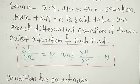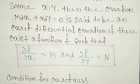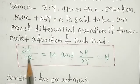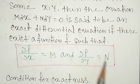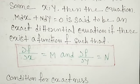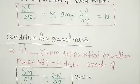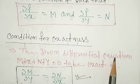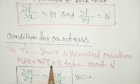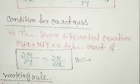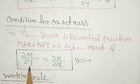Now, any equation in the form of M dx plus N dy is said to be exact if ∂f/∂x = M and ∂f/∂y = N and these should be equal. So, the condition for exactness: the given differential equation M dx plus N dy = 0 is exact if ∂M/∂y = ∂N/∂x.